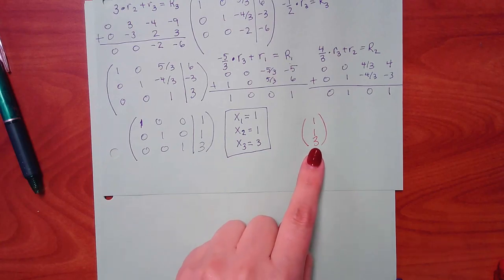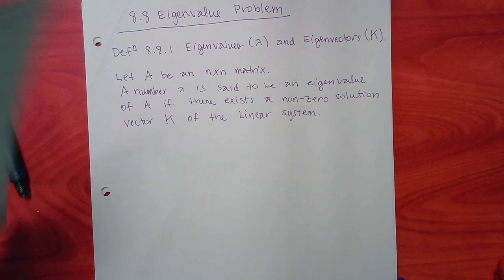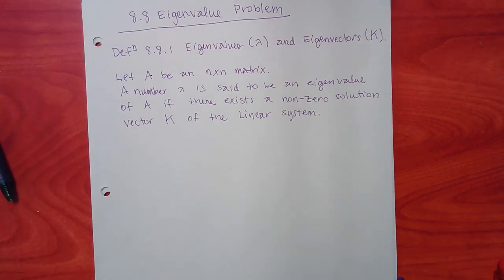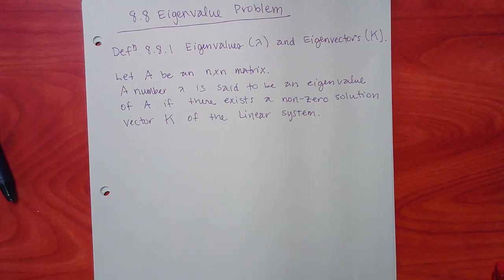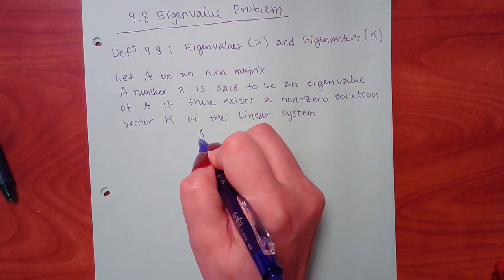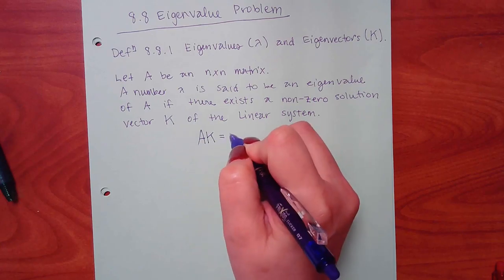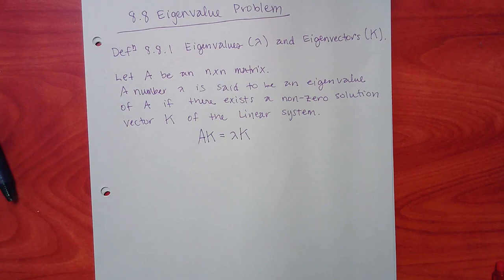Remember in the last section, we did a problem and we got a solution like 1, 1, 3. That is what they mean by a solution vector — the top is X1, the middle is X2, the bottom is X3. So K is that long vector, and it has this really weird relationship with lambda.